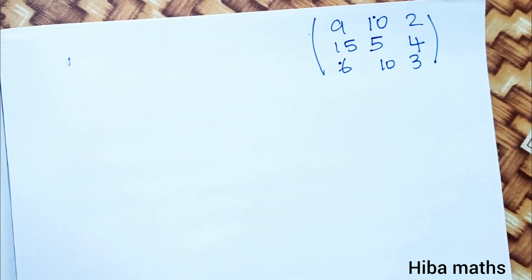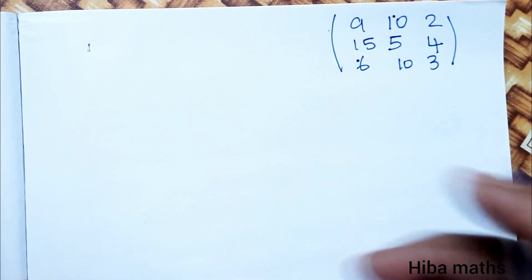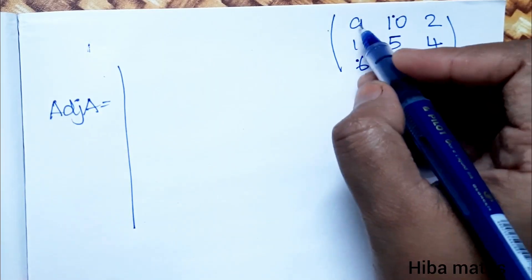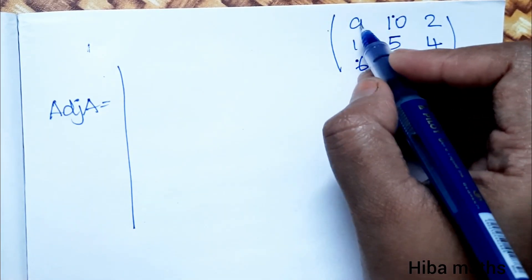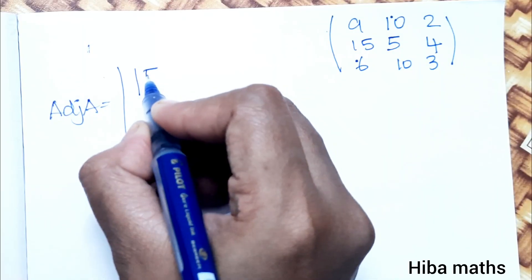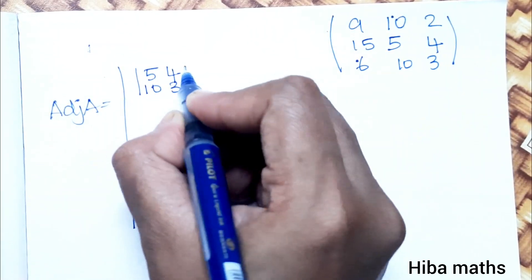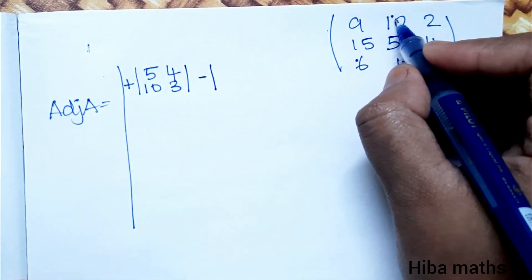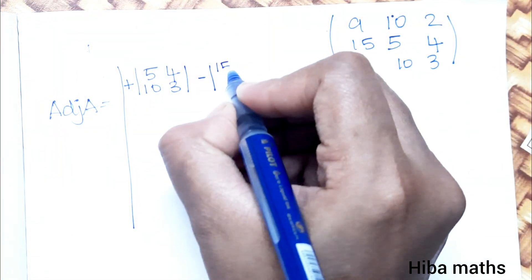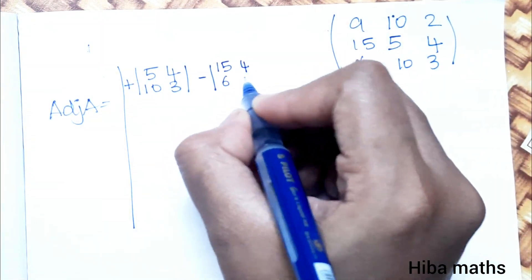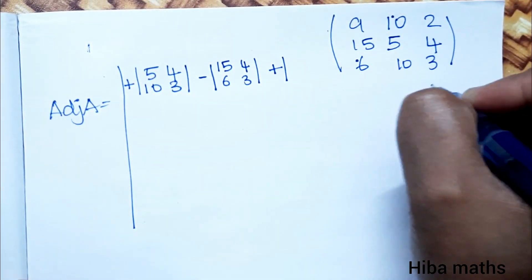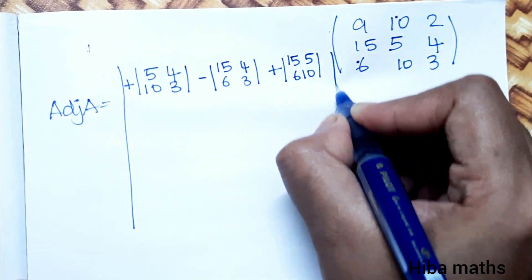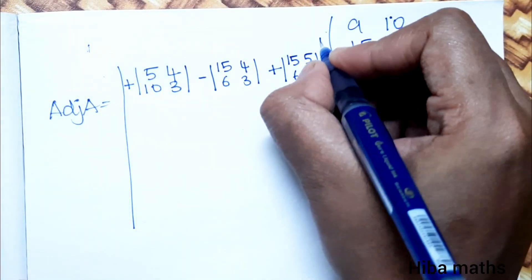The adjoint of A is the transpose of the cofactor matrix. Now the first row cofactors: for element at row 1, column 1, we take the 2×2 submatrix.